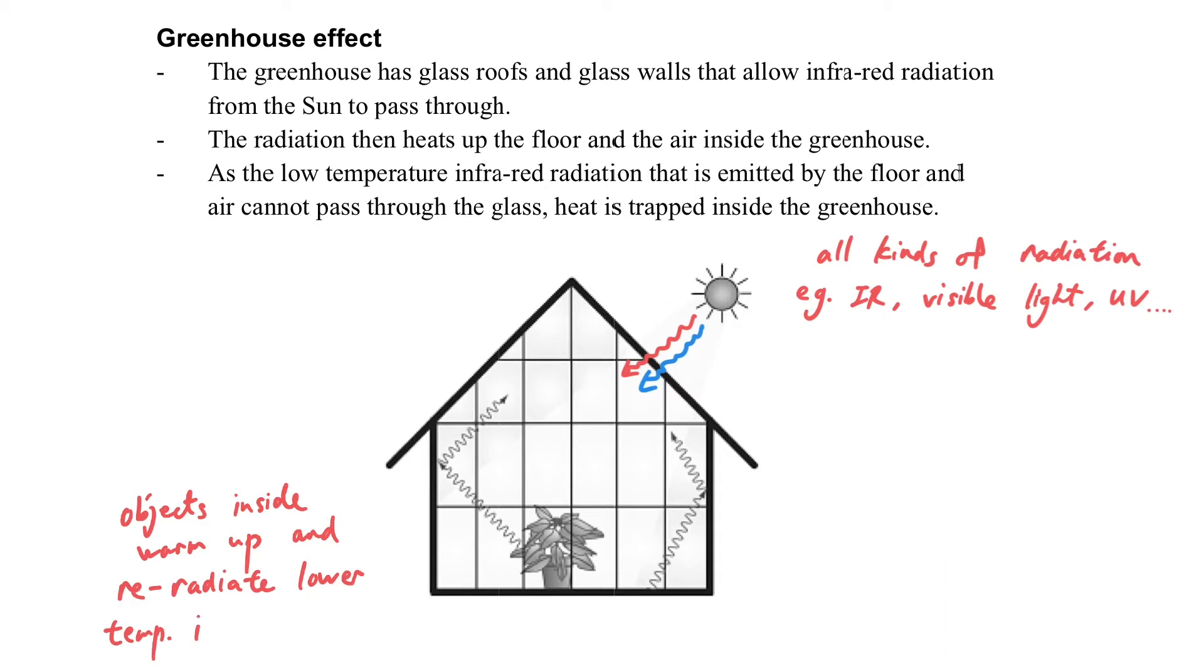But when the radiation is re-radiated, it will radiate at a lower temperature infrared radiation, which has a lower energy. And this kind of radiation, however, it cannot pass through the glass surface of the greenhouse. It will be reflected. So those low-temperature infrared radiation will then be reflected inside rather than leaving the greenhouse.